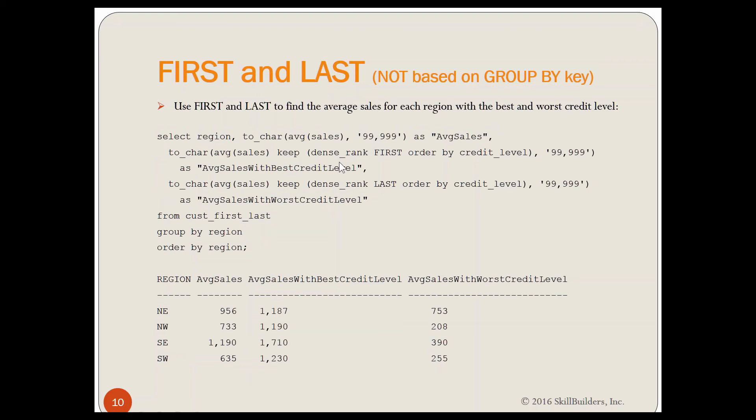Now all we've got to do is get the syntax, which is a little weird, I'll admit, but this is what it is. What I do is I have my region and my normal average of sales. That didn't change. But now I'm going to take my average sales, keep, open paren, and then I have to say dense rank. Keep and dense rank. Where they get all that from, who knows? And then I want the first order by credit level. And I want the last order by credit level. It's this order by column that's the important thing. Order by credit level.